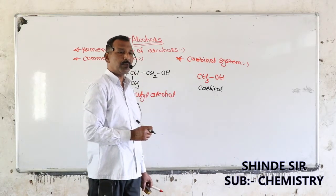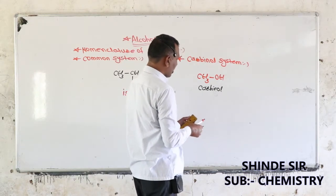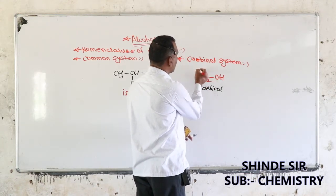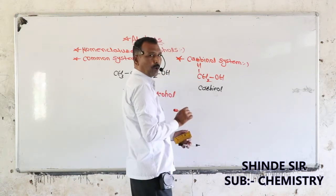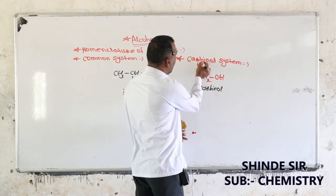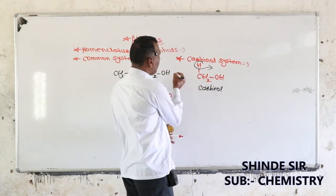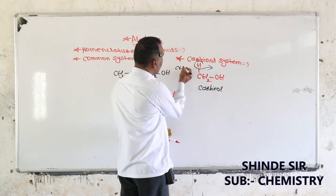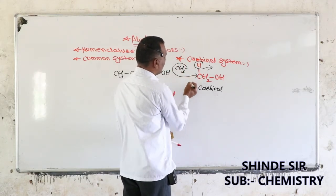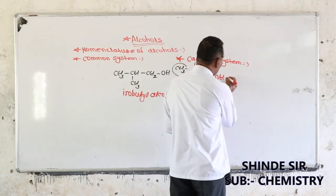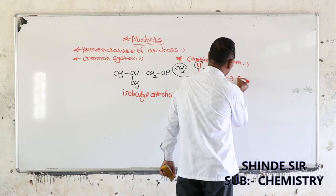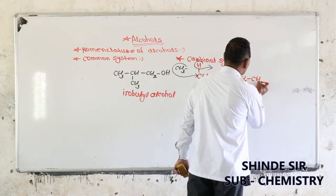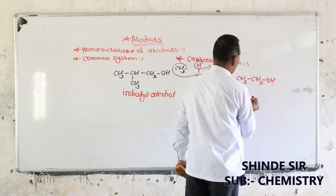As a derivative of Carbinol: if we remove one hydrogen from methyl alcohol and introduce an alkyl group, for example a methyl group, then we obtain the compound CH3-CH2-OH. This is the derivative of methyl alcohol.